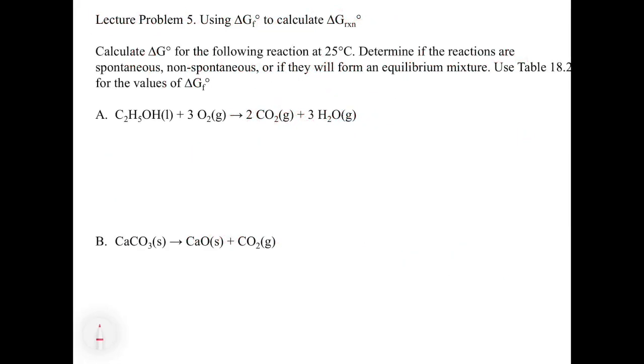So in this lecture problem, we're going to use the equation that we just derived to do some calculations to get delta G. So this one says calculate the delta G for the following reaction at 25 degrees Celsius. Determine if the reactions are spontaneous, non-spontaneous, or if they will form an equilibrium mixture. Use table 18.2 for the values of delta G. So we're going to do one, the other one I think you guys can try at home. So we'll do the first one A and then you guys can try B at home. And obviously we don't have table 18.2 in front of us immediately. So what I'm going to do is I'm going to go and reference those values for you and then we'll start to just plug them into the equation.